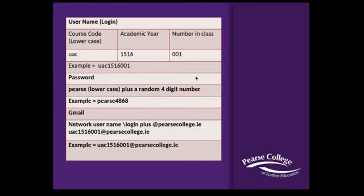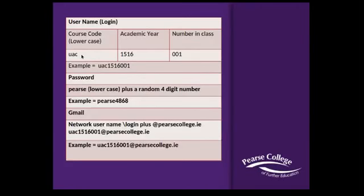To help you remember your username and login, I will explain how we have devised your particular username. The first part of your username will be the course code that you are now enrolled in. For instance, if you are in the University Access course, your code will be UAC. There is a different code for every single course in Pierce College — for instance, if you are in soccer coaching, your course code will be SOCC. You will see on the label given to you what that course code is.